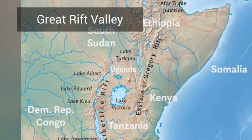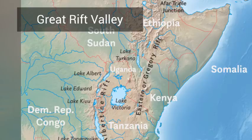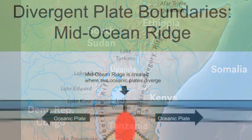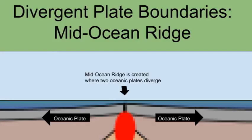One of the best examples of this today is the Rift Valley in Africa. Eventually the plates will separate enough that the valley will be so low that it will allow the ocean to rush in, thus separating the eastern part of Africa from the rest. The second type of landform caused by plates separating is a mid-ocean ridge. This is formed when two oceanic plates are pulling apart, leaving a gap between them which allows magma to rise to the surface.